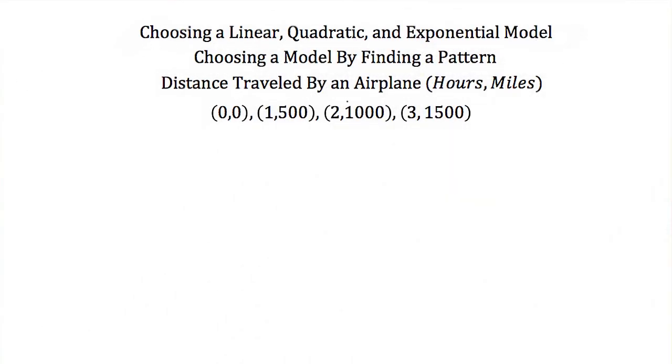Now there's a second method that we can use to choose between a linear, quadratic, and exponential model. And this is by just finding a pattern in the data. So here again we have the same data of the distance traveled by an airplane. The way to figure this out is to look at just the x and y values. So my x values in this case are 0, 1, 2, and 3. My y values are 0, 500, 1000, and 1500.